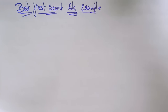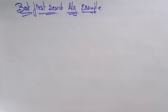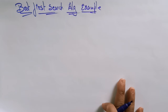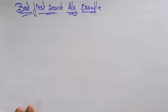Let's continue with the Best First Search algorithm, which is an informed search algorithm. In the previous video I explained the basic steps of implementing the algorithm. Now let's see an example of how to search a particular node using Best First Search by implementing that algorithm.